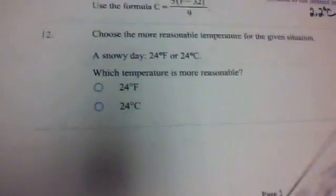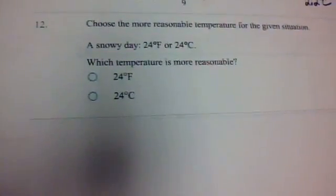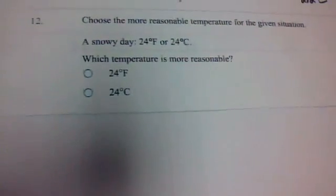And finally, number 12, you want to choose a more reasonable temperature for the given situation. A snowy day, which is 24 degrees Fahrenheit or 24 degrees Celsius.